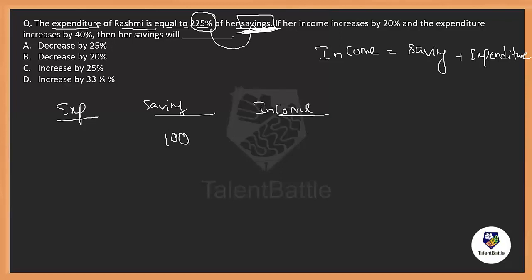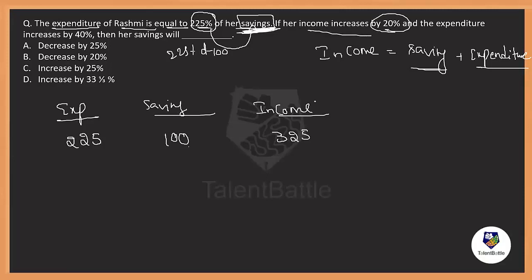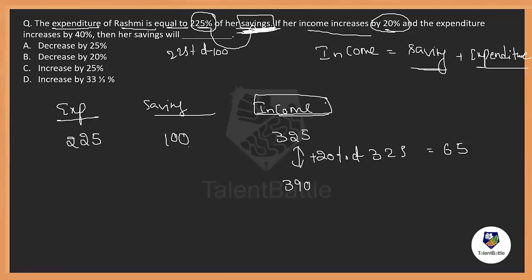Let us assume savings = 100 rupees. Then expenditure = 225% of 100 = 225 rupees. So income = 100 + 225 = 325 rupees. Now, income increases by 20%: 20% of 325 = 65, so new income = 325 + 65 = 390 rupees. Expenditure increases by 40%: 40% of 225 = 90, so new expenditure = 225 + 90 = 315 rupees.